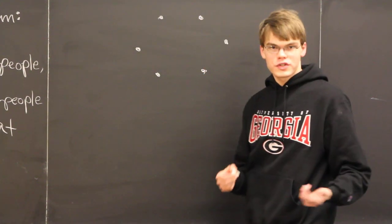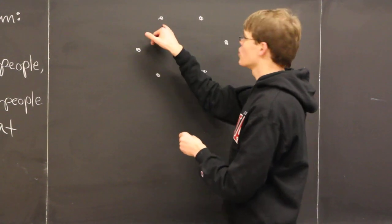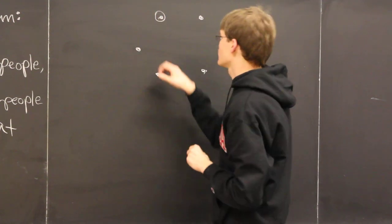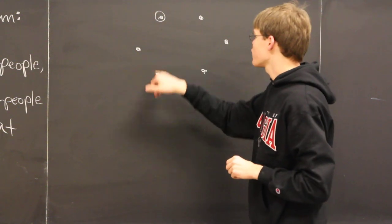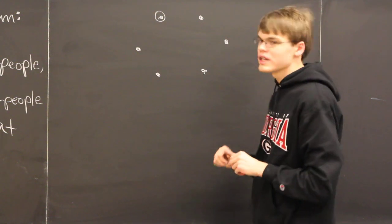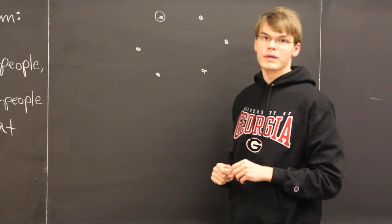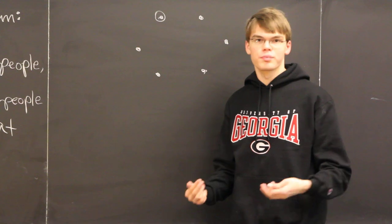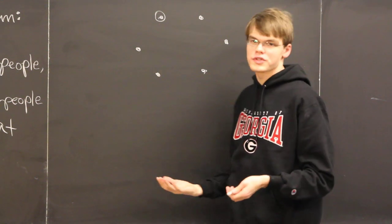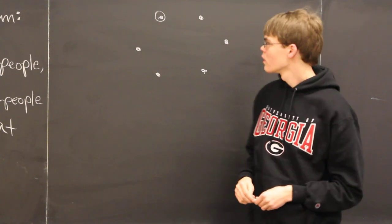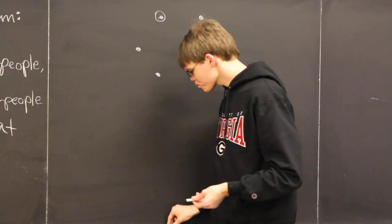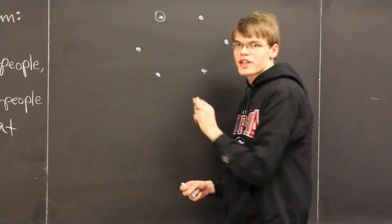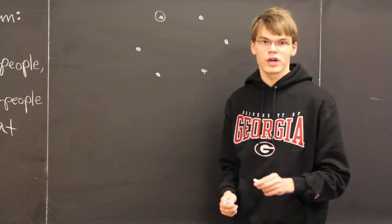The first thing we want to do is select one of these people and focus on them. This person is going to have five line segments going to each of the other people. We don't know the colors of these line segments — they could be either red or blue — but one thing we do know is that at least three of those line segments will be of a single color.